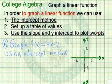So let's look at an example of each of these. Suppose we want to graph f of x equals 4x minus 2, and we're going to use the intercept method.